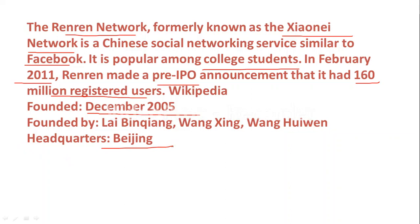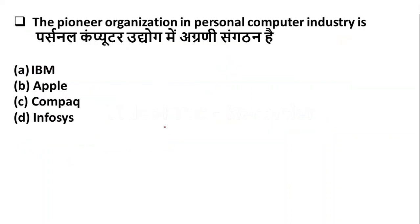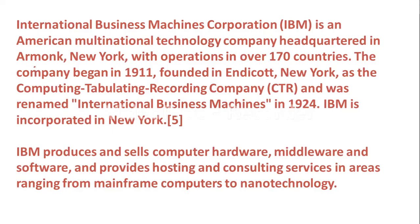The pioneer organization in the personal computer industry is — Option A: IBM. Option B: Apple. Option C: Compaq. Option D: InfoSys. The pioneer organization in personal computers is Option A — IBM is the right answer. IBM stands for International Business Machines Corporation.